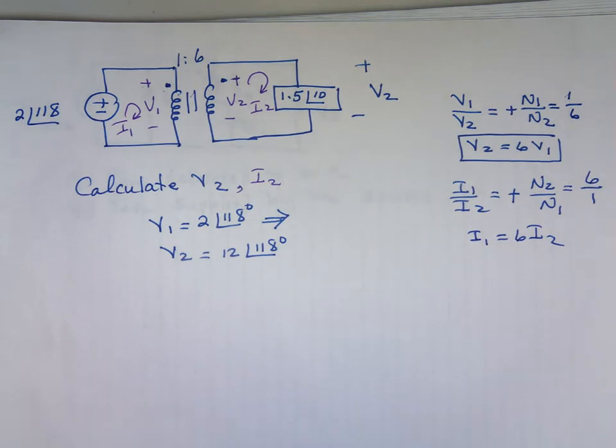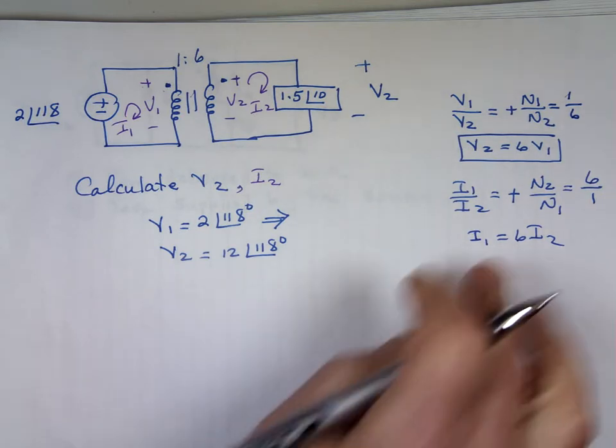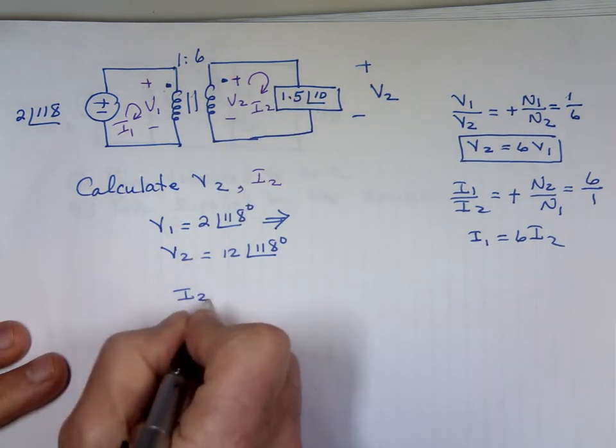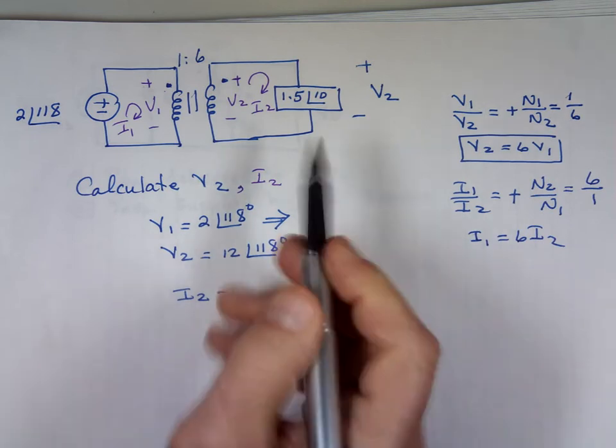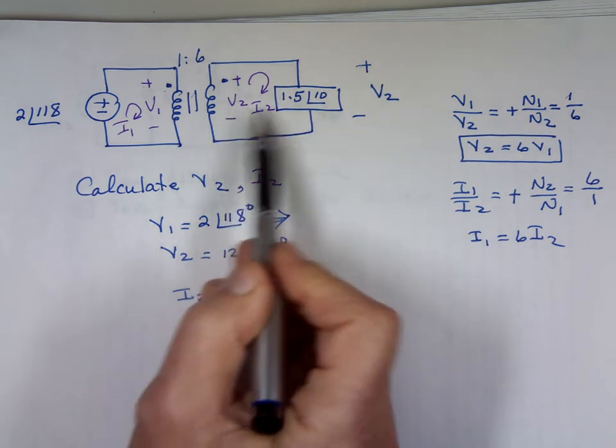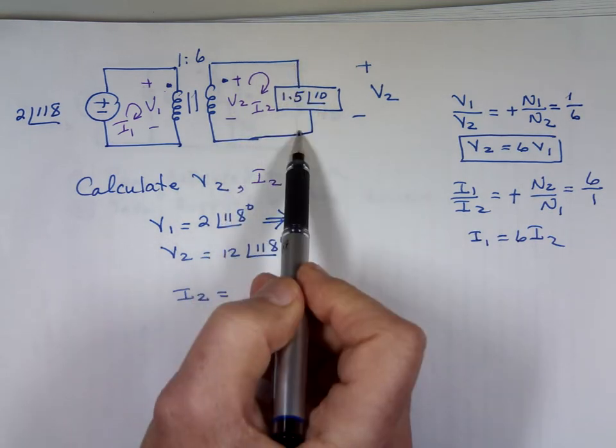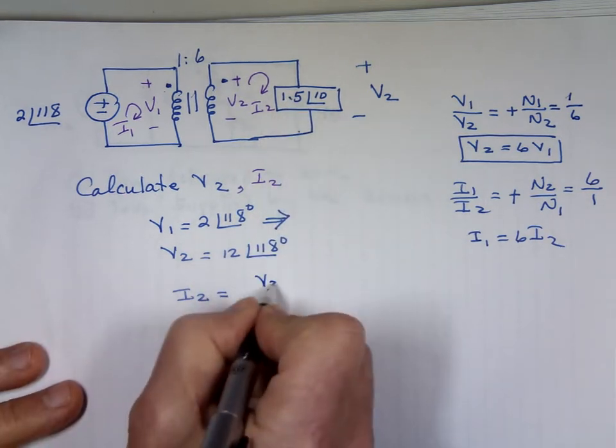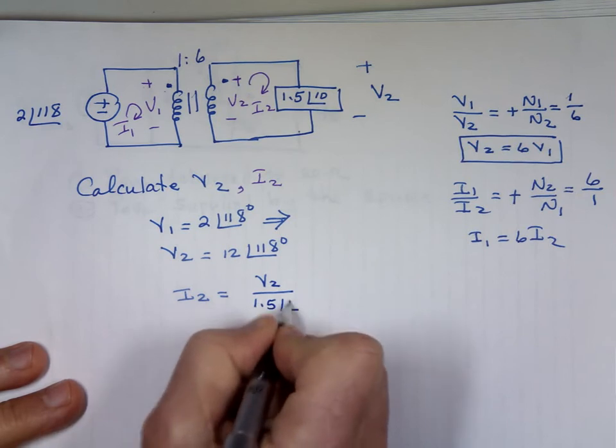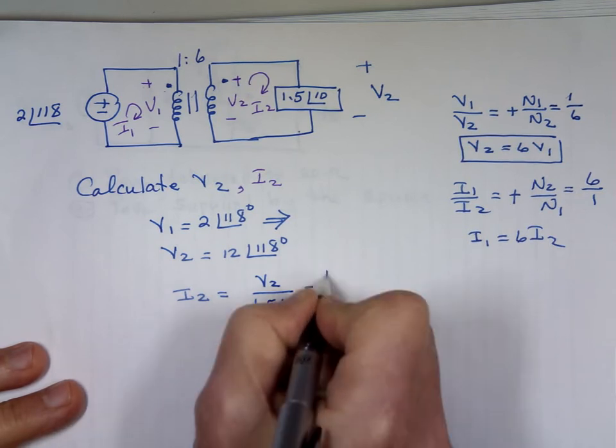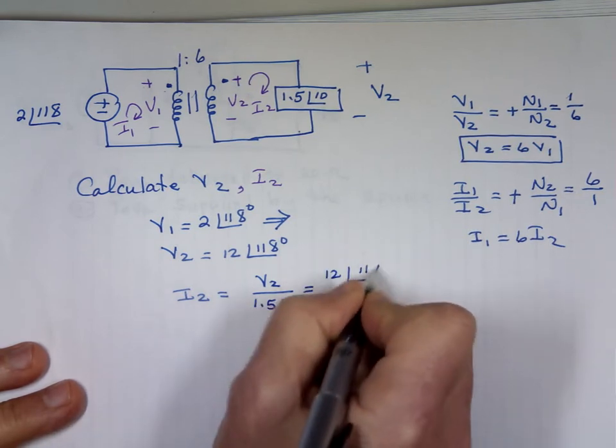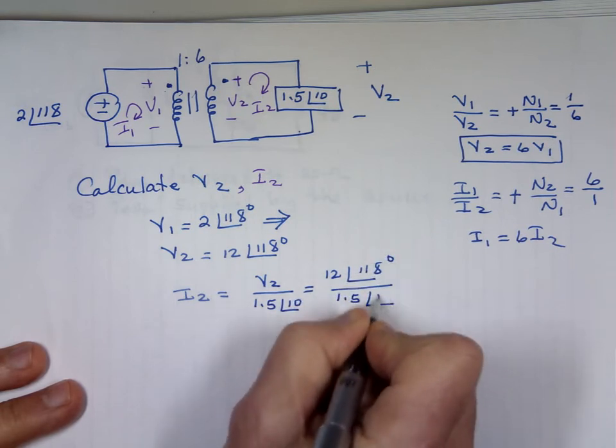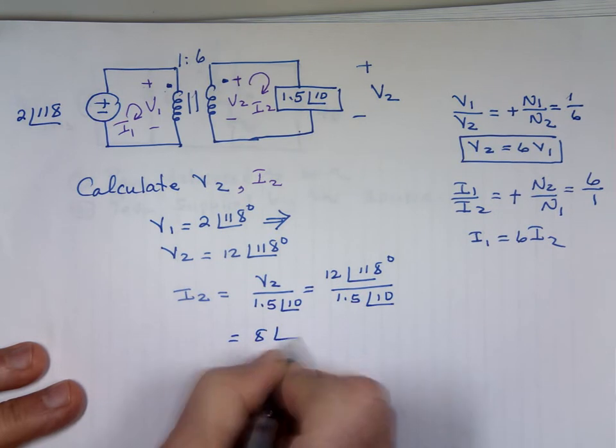When they both enter the dots that's a negative. When they both leave the dots that's negative. If one enters and one leaves the dot then that's a plus. So in this case it's 6 to 1, so that means if you clean this equation, I sub 1 is equal to 6 times I sub 2.